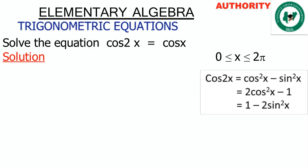Since we are working with x, we use x. So cos 2x is equal to cos²x minus sin²x. Also, cos 2x is still equal to 1 minus 2sin²x. We are going to pick one of these formulas to solve the problem. Let's pick the last one: 1 minus 2sin²x.